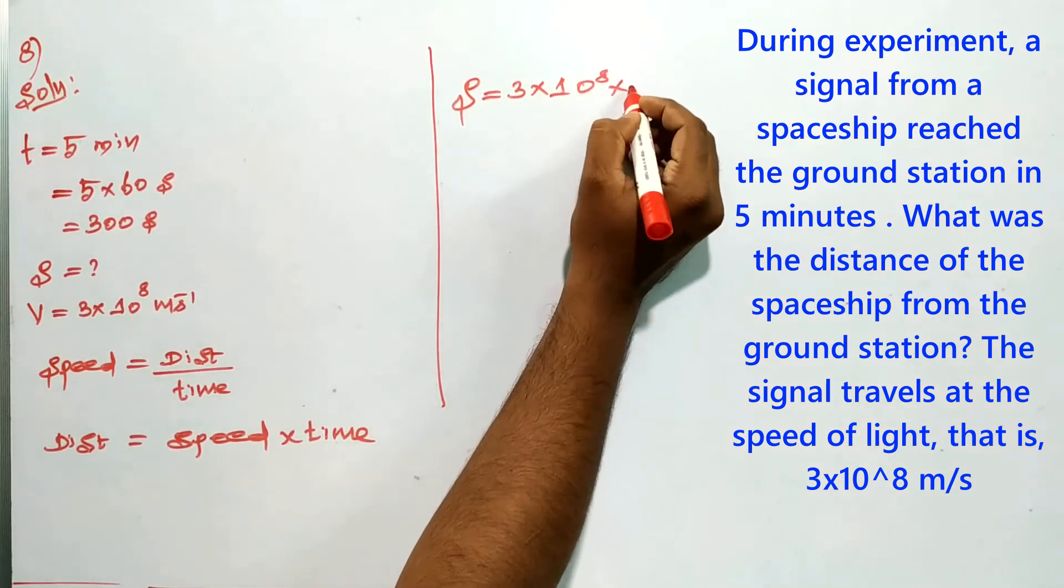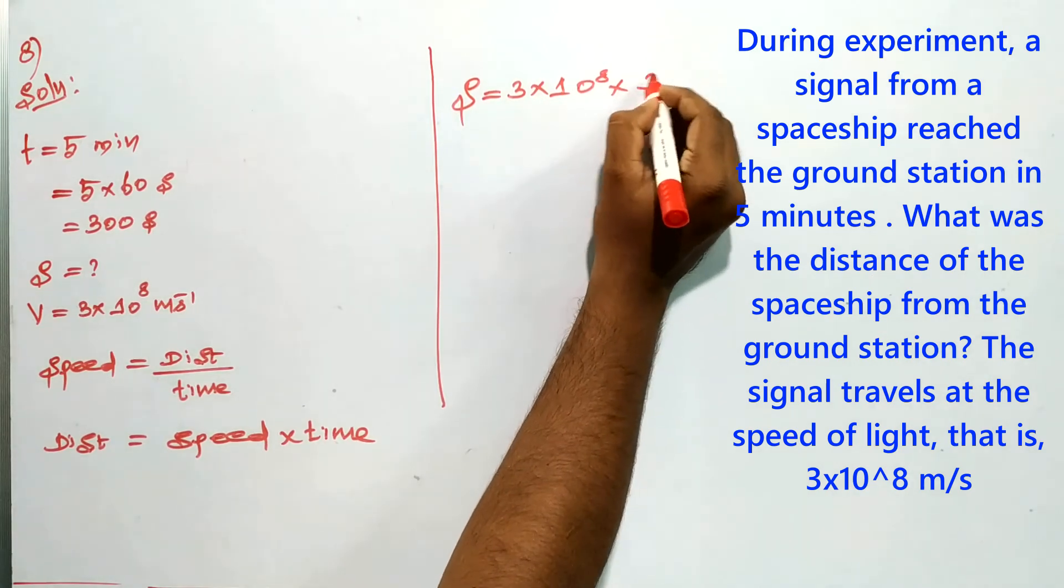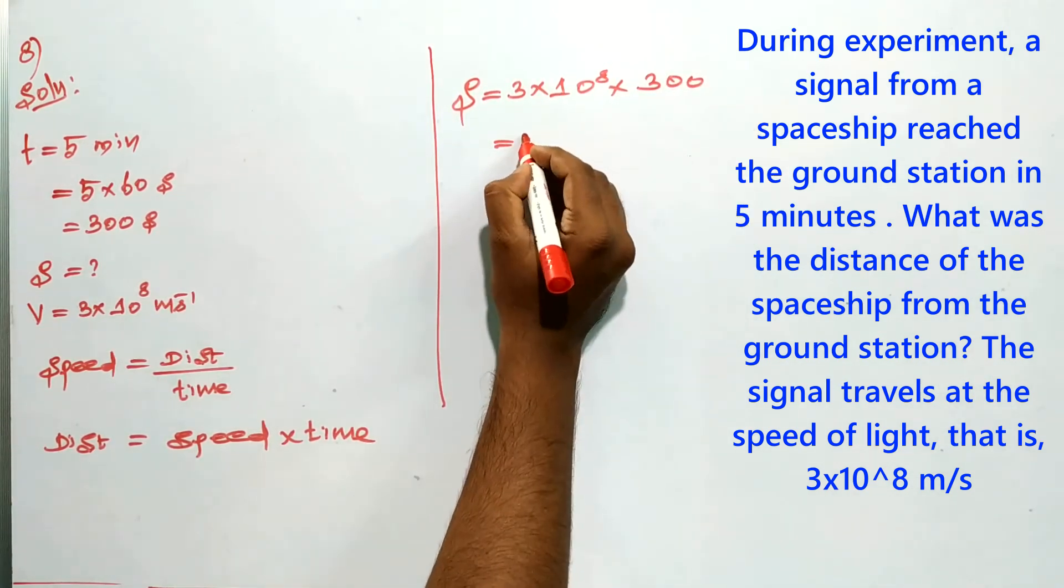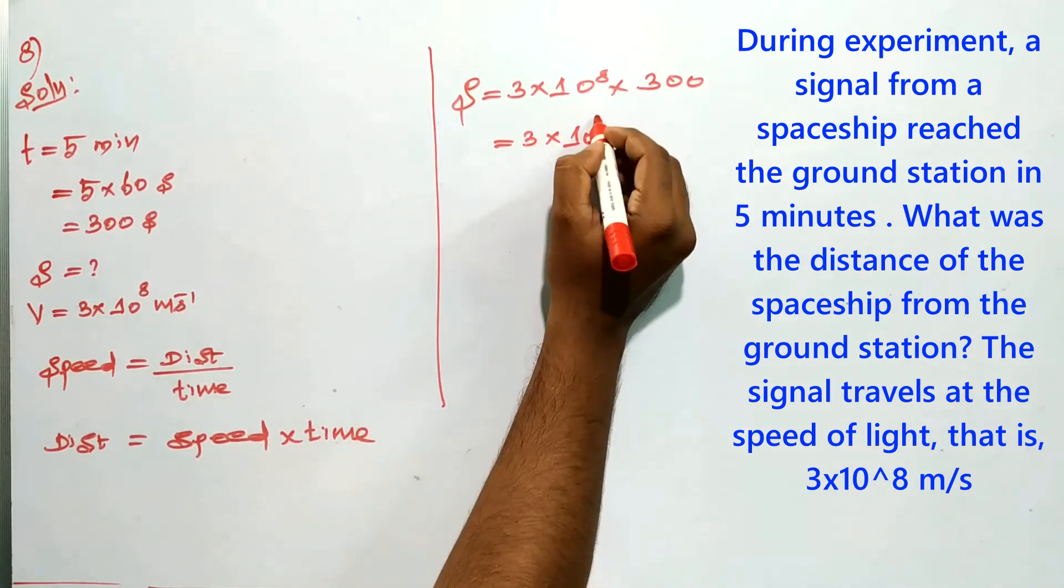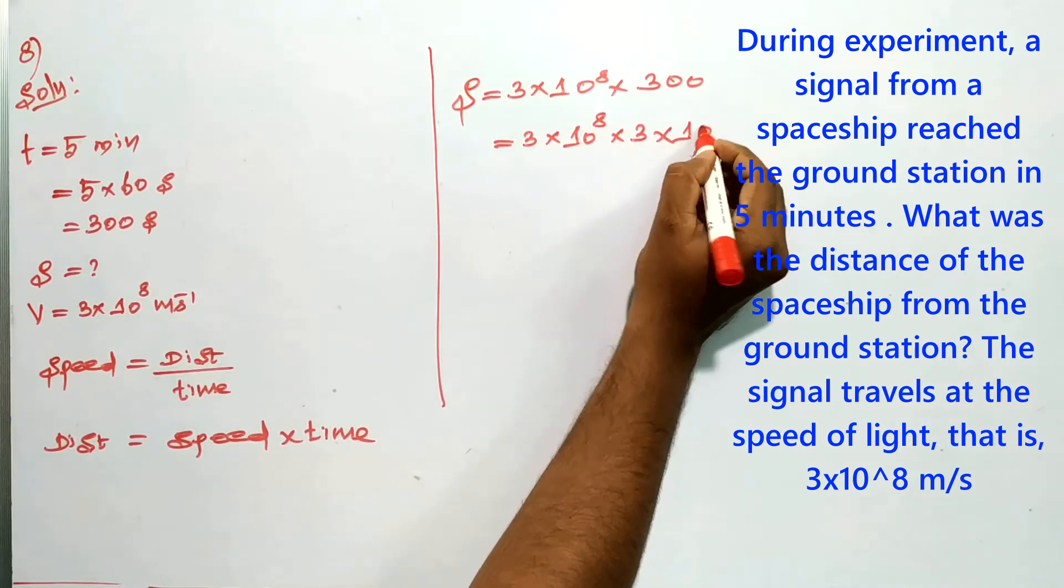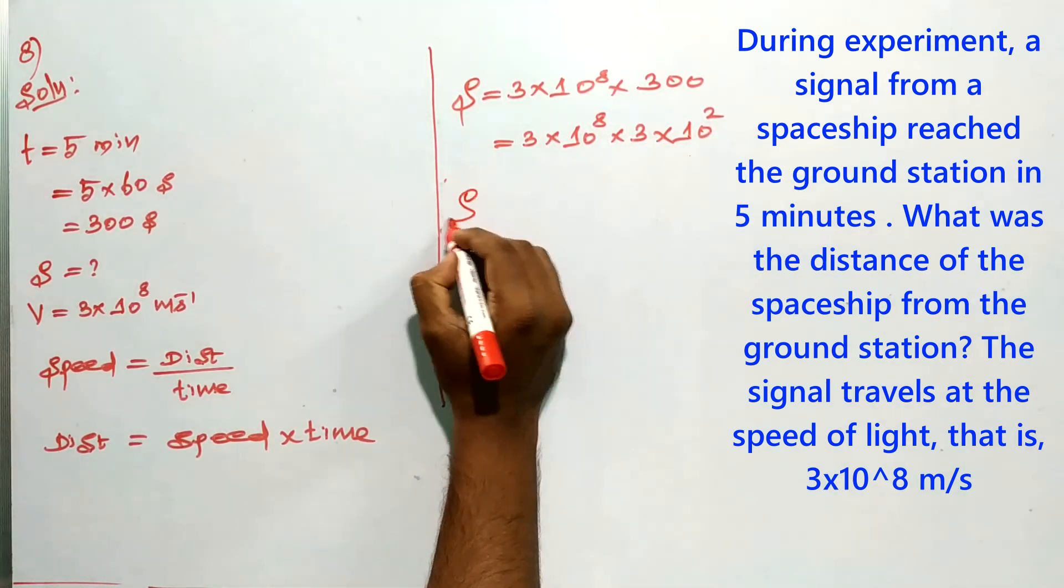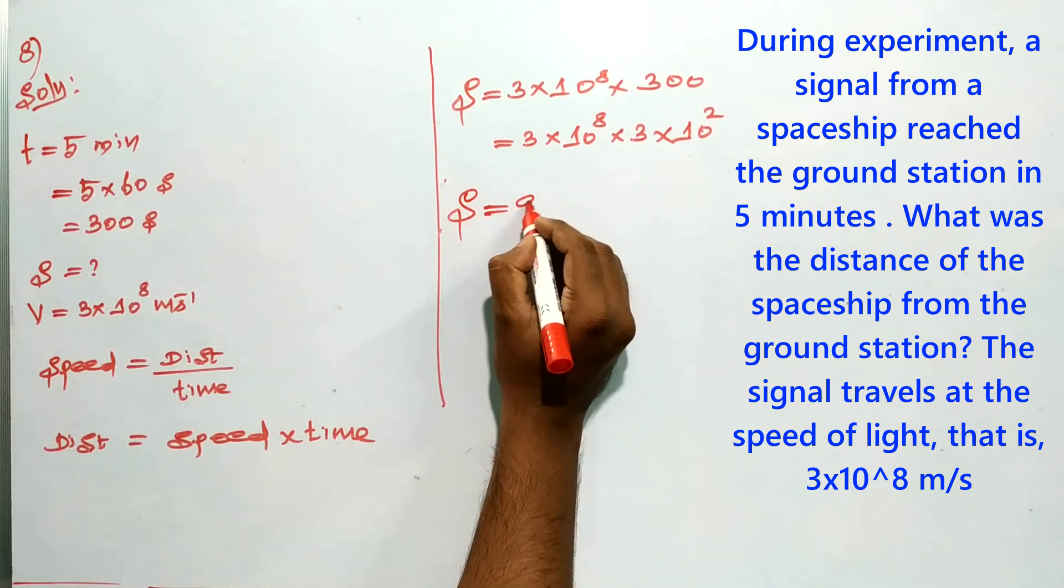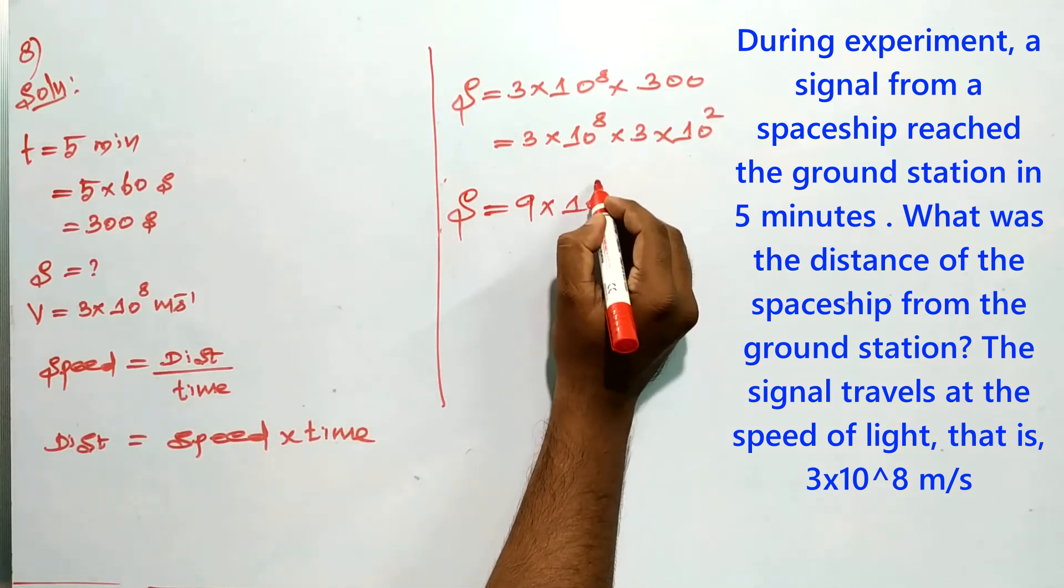3×10^8 into 300. We can write 300 as 3×10^2. Then directly we can write 9×10^10 meters. That is the distance.